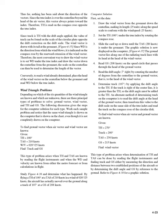This type of problem arises when TH and TAS are known by reading the flight instruments and WD and velocity are known from the meteorological forecast or from calculations in flight. Study Figure 4-36. By flying a TH of 100° at a TAS of 210 knots in a wind of 020°/25 knots, the aircraft has actually moved over the ground along a track of 107° at a GS of 208 knots. Computer solution: 1. Draw the wind vector from the grommet down the center line, making its length 25 units along the speed scale. 2. Set TH 100° under the true index by rotating the compass rose. 3. Slide the card until TAS 210 knots is under the grommet.